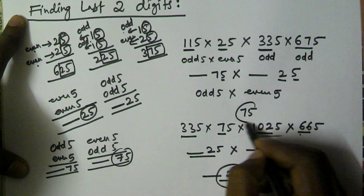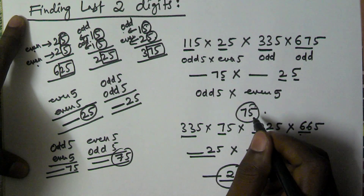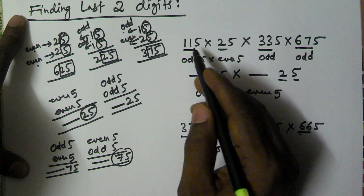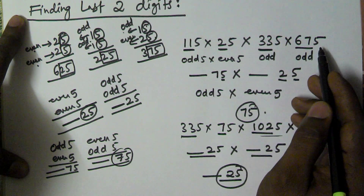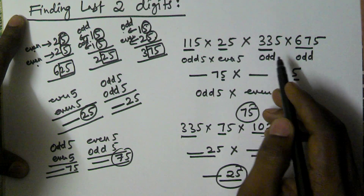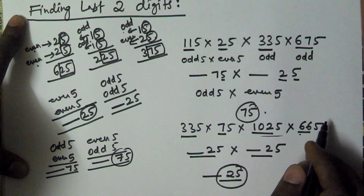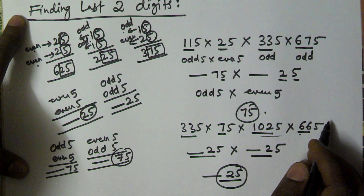You can apply this rule when all numbers are ending with 5 in a given multiplication. I hope you understand. Thank you for watching this video, please subscribe to my channel.